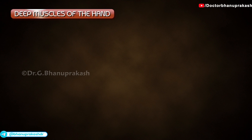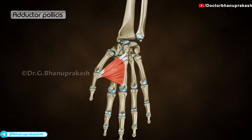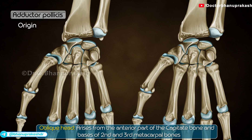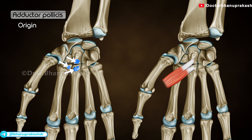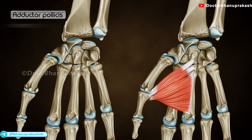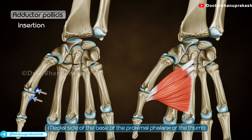Deep muscles of the hand: Adductor pollicis. The origin consists of two heads. The oblique head arises from the anterior part of the capitate bone and bases of the second and third metacarpal bones. The transverse head arises from the ridge on the distal two-thirds of the anterior surface of the shaft of the third metacarpal bone. The insertion is at the medial side of the base of the proximal phalanx of the thumb.